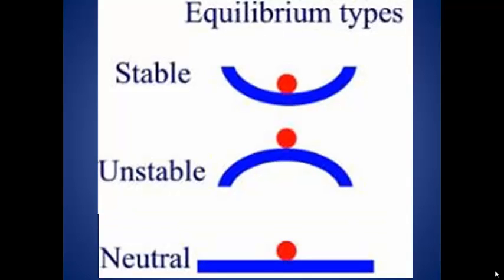And finally we have what is known as neutral equilibrium. The ball again starts in static equilibrium. We can apply a force in any direction, and the ball will eventually come to a stop in a new static equilibrium.